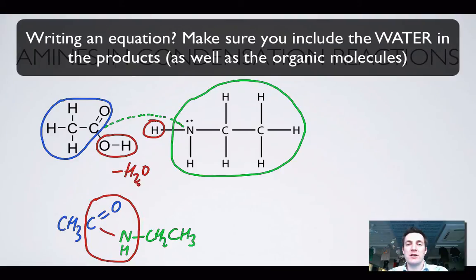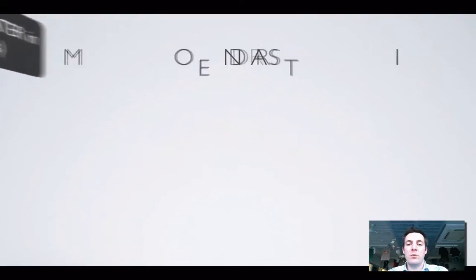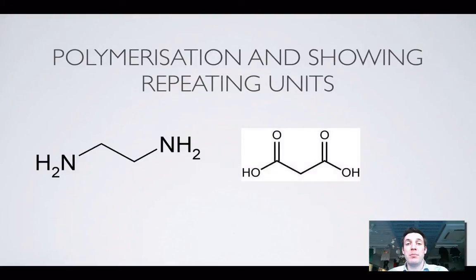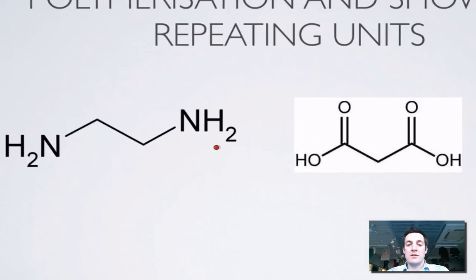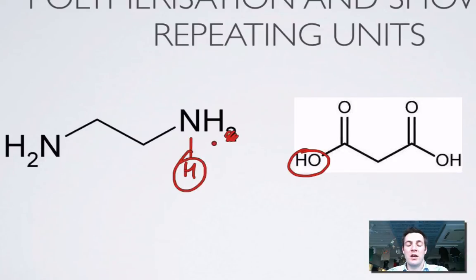This is a condensation reaction because we've lost a small molecule. To make a polymer, it's useful to have something that can do a condensation reaction at both ends of the molecule. So here's a diamine — it's got two amine groups — and here's a dioic acid. We're going to lose an OH and one of the H's, forming a new bond between the nitrogen and the carbon.